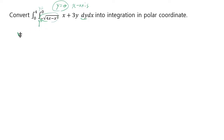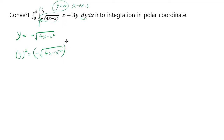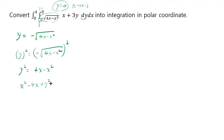But this other curve is a little more mysterious, so let's investigate what it is. First, we want to square both sides to get rid of the square root. Square root squared will cancel and negative becomes positive, so you end up with y squared equals 4x minus x squared. Moving everything to one side gives x squared minus 4x plus y squared equals 0.